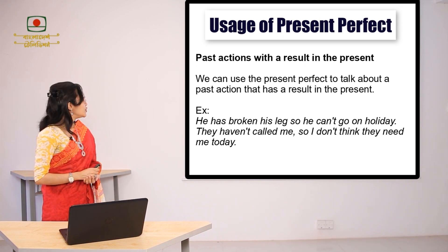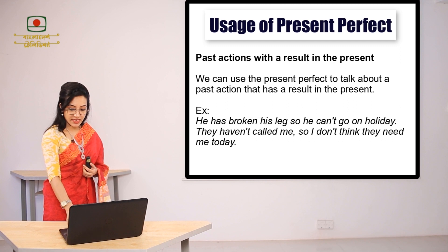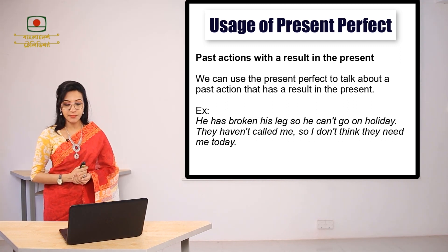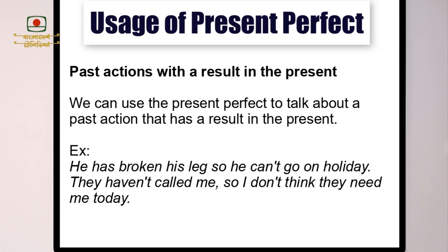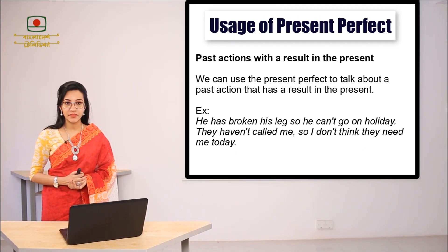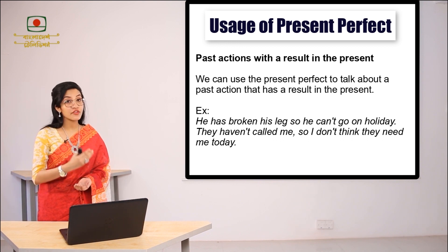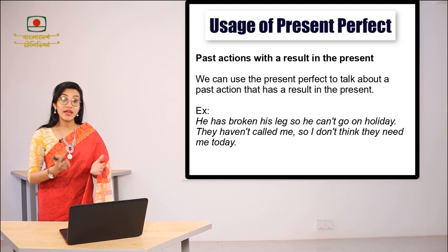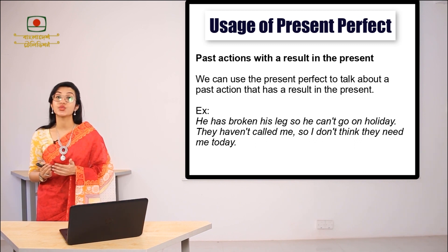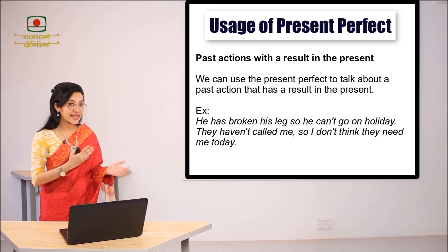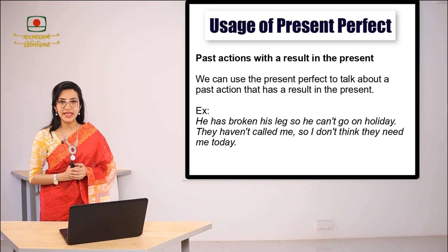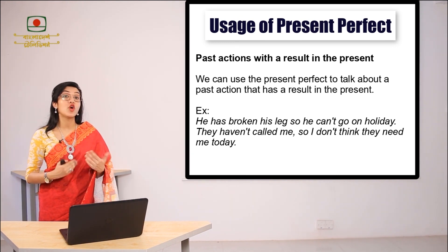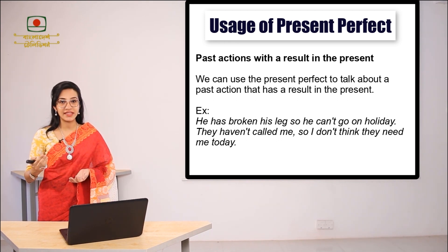We use present perfect tense to describe past actions with a result in the present. For example: 'He has broken his leg, so he cannot go on holiday.' A person has broken his leg and because of the injury, he won't be able to go on holiday — the effect is still connected to the present. Similarly, 'They haven't called me, so I don't think they need me today' shows that the effect of not calling is still present.